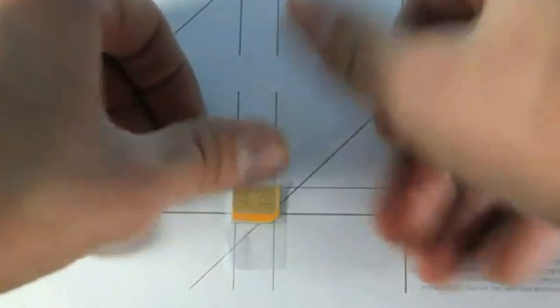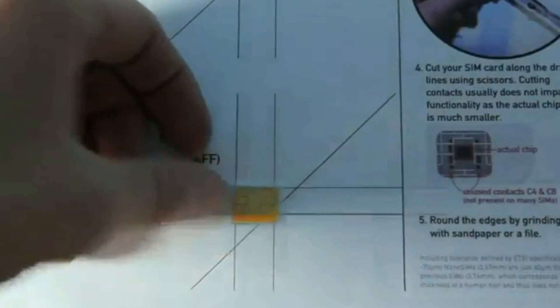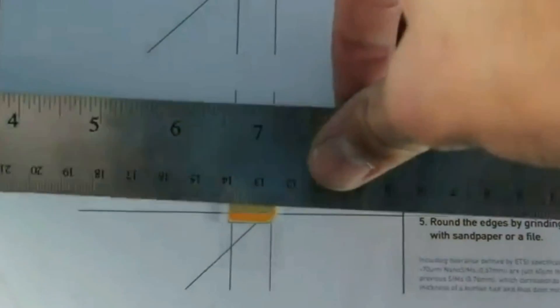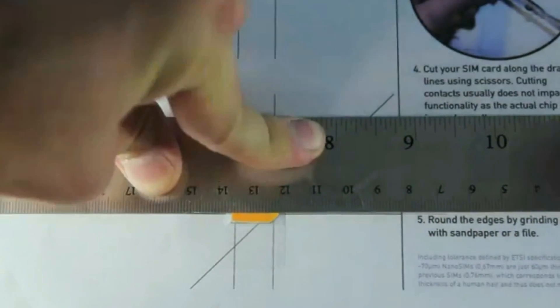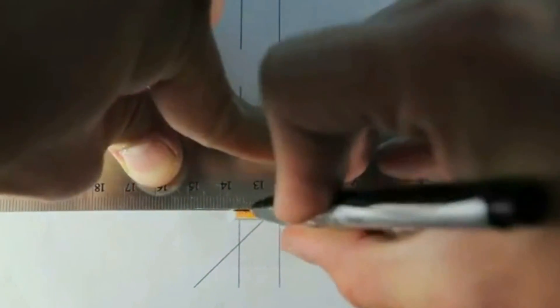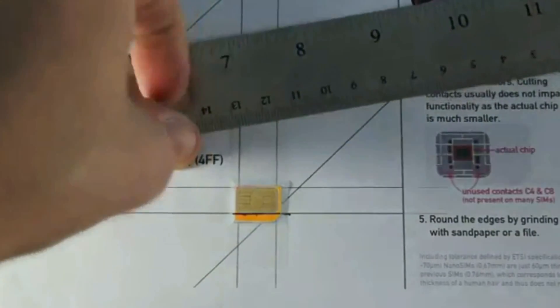Now grab your ruler, line it up with the lines, and take your pen or Sharpie and trace the line. There you go, it should look just like that. Go ahead and do that for all lines.